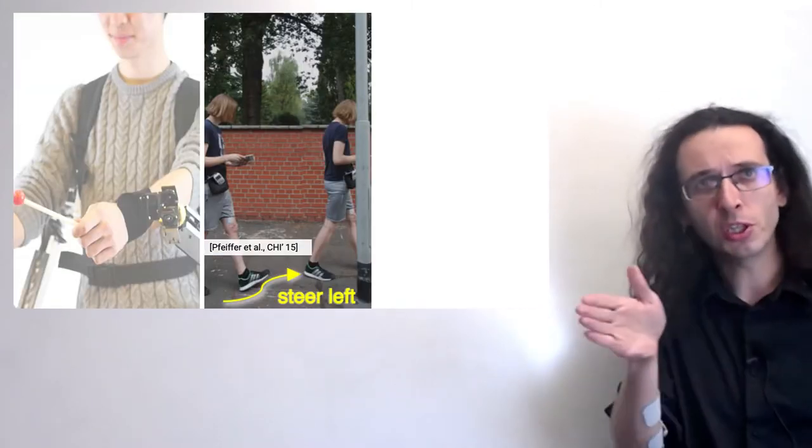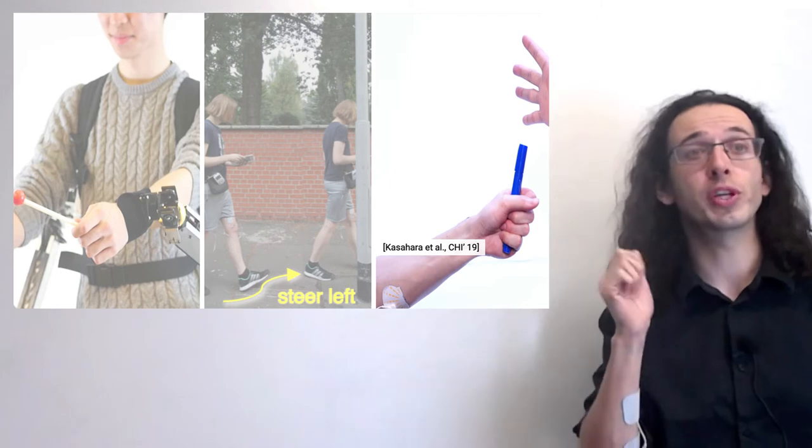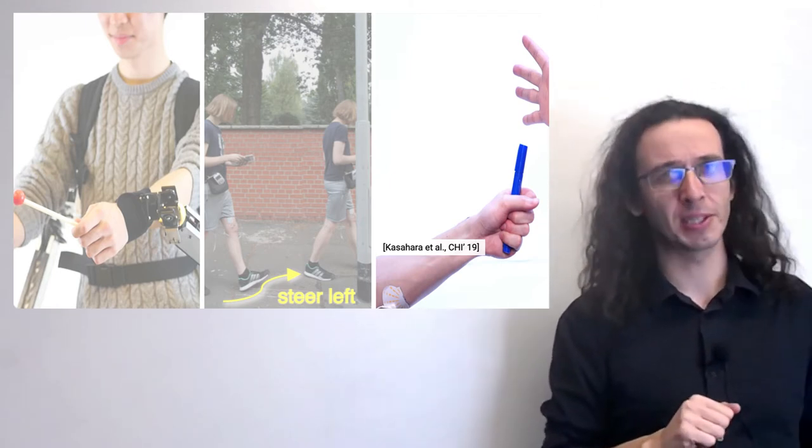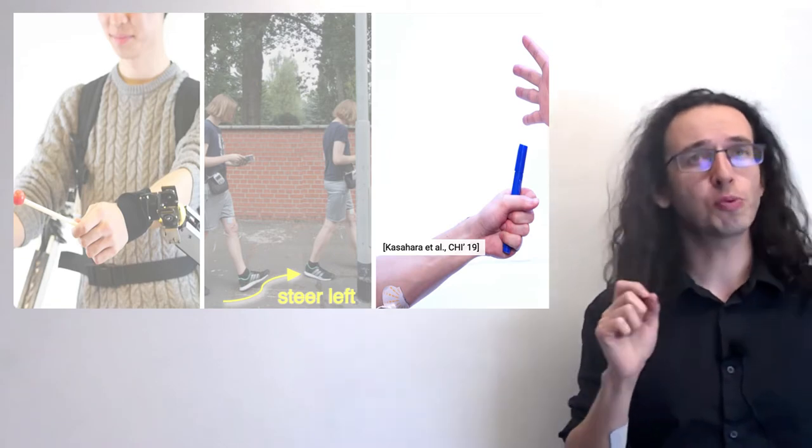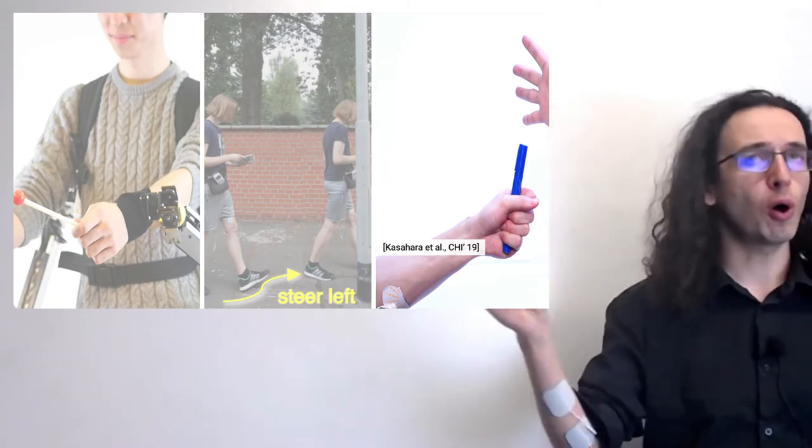Such as this exoskeleton that makes a user play the drums, or using muscle stimulation to steer the user into avoiding a collision, or using muscle stimulation to give a user an accelerated reaction time so that they would catch a falling object that they would normally miss. Now, these provide the benefit of computer-assisted physical ability.